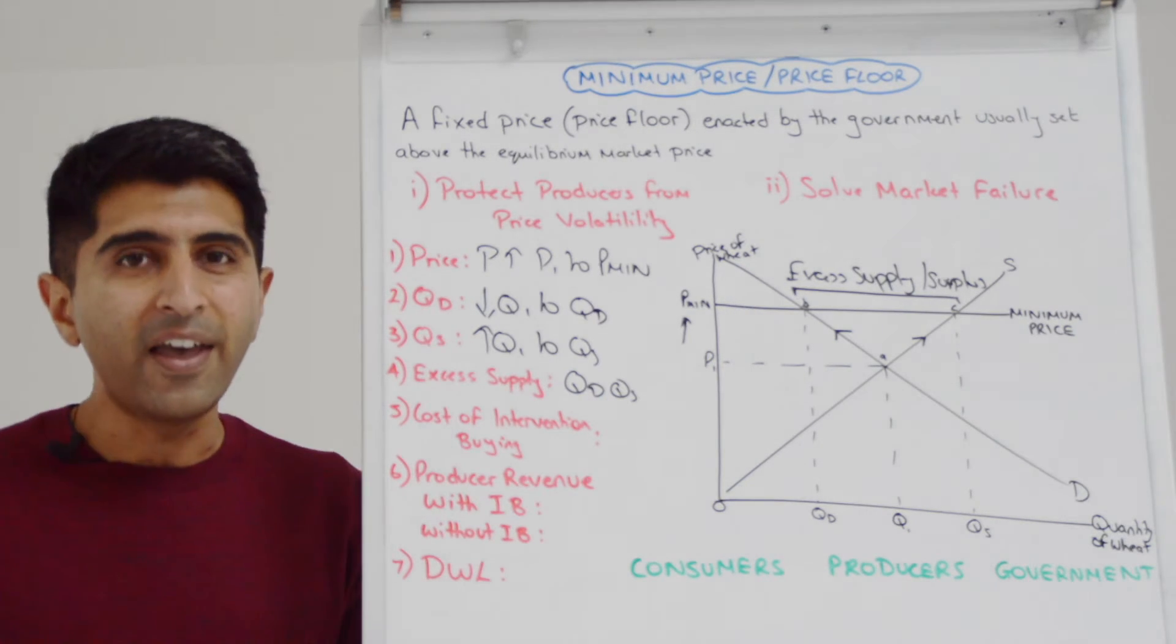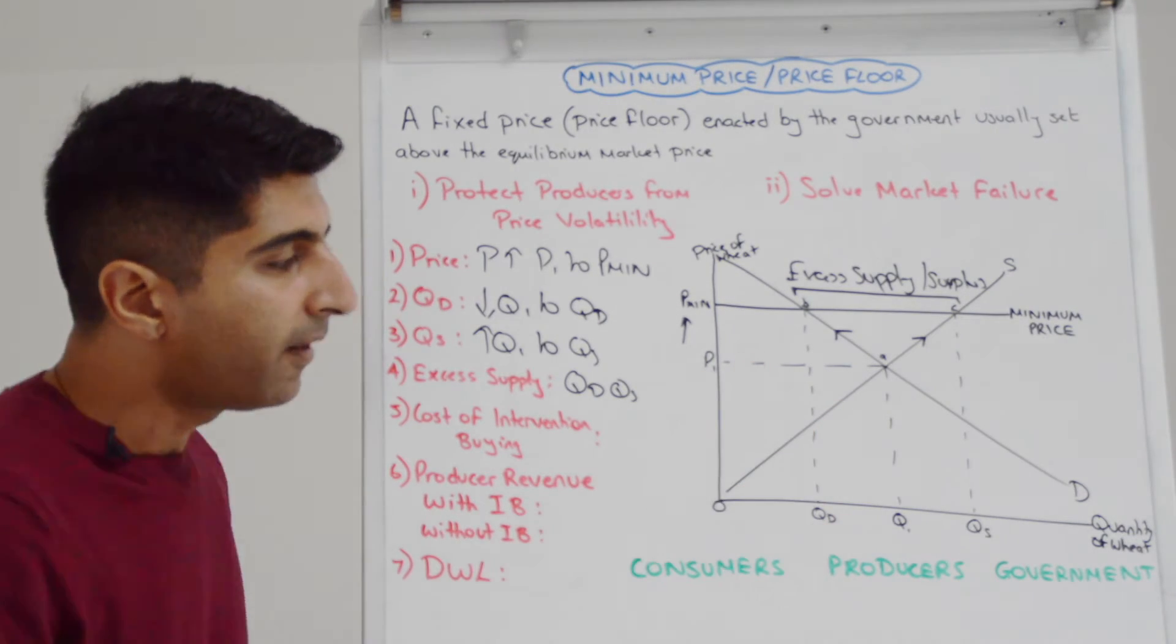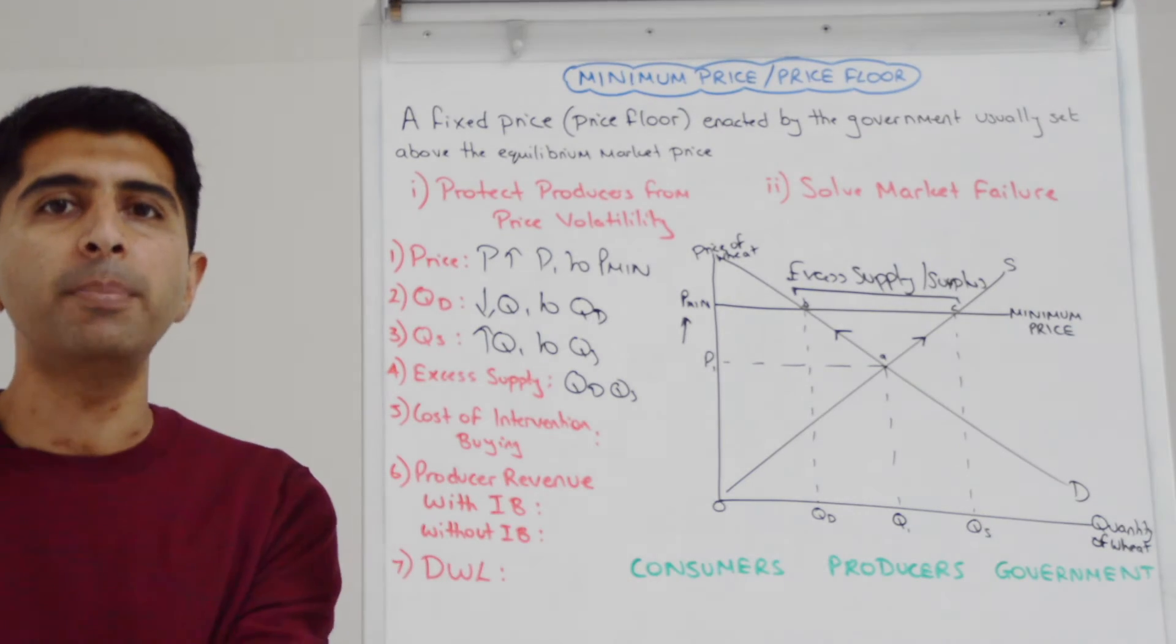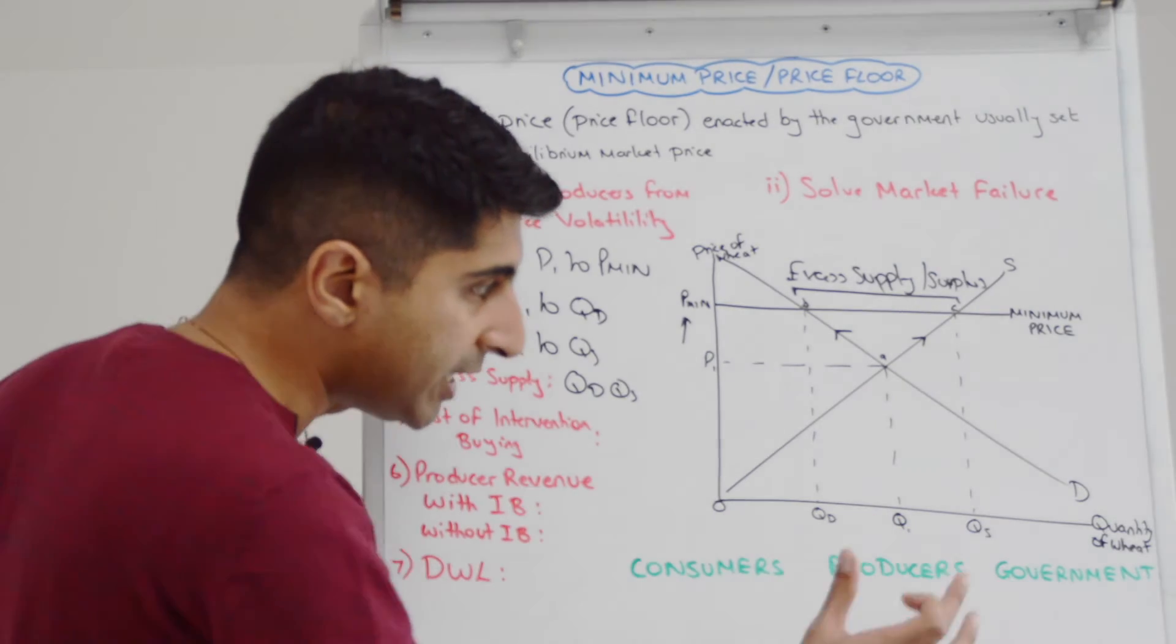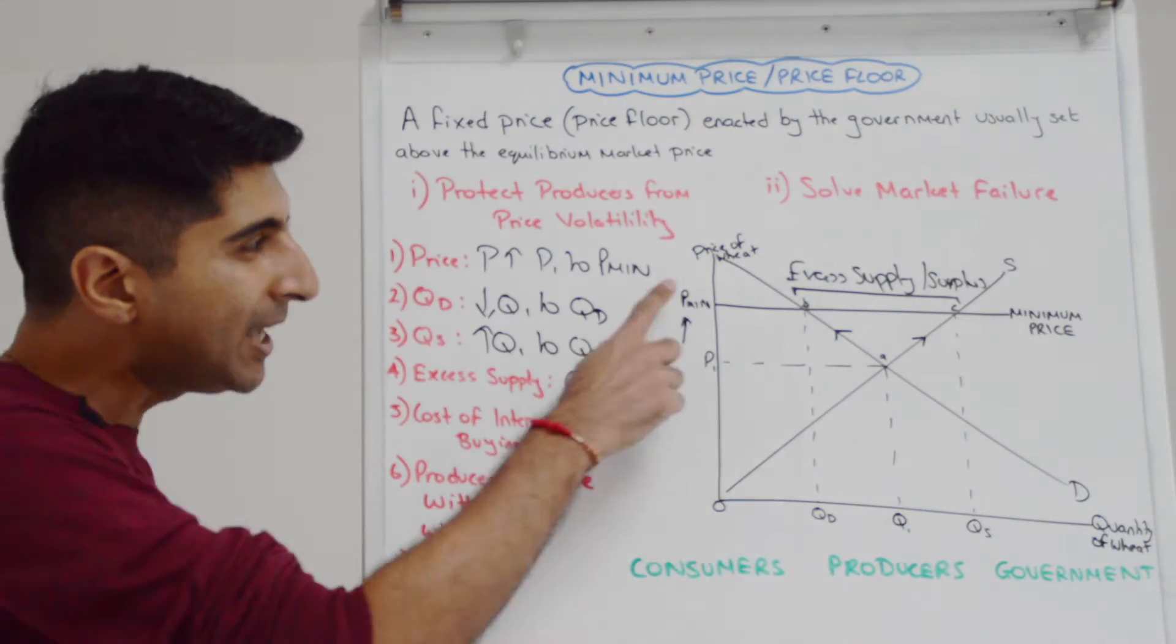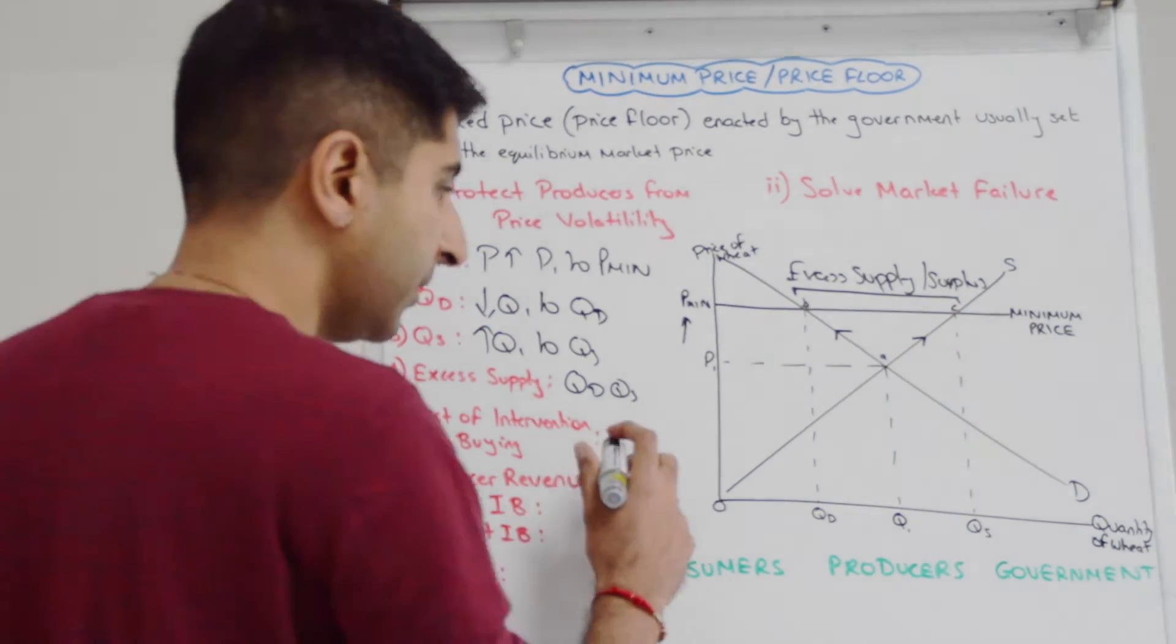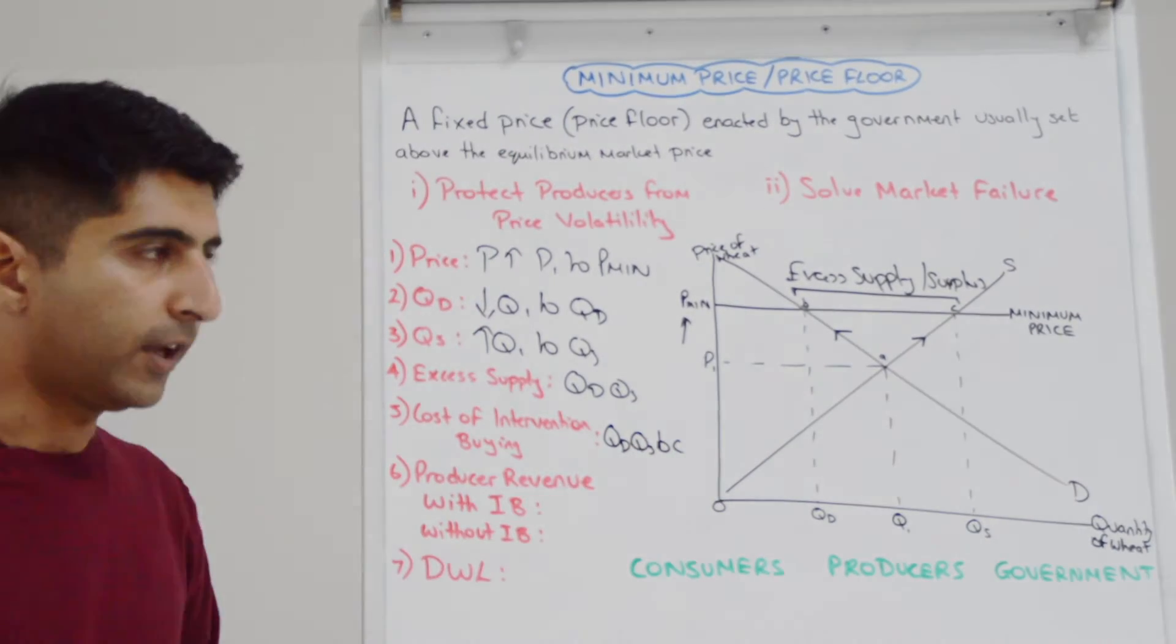So often what you will see, as long as the government can afford it, is the government will come in and they will buy up the excess supply, a process known as intervention buying. And what we can see on the diagram is exactly what the cost to the government will be of intervention buying. So the government would come in, the excess supply of QDQS is what they're buying up, and they're buying it up at the price of PMIN. So PMIN multiplied by QDQS gives us the area QDQSBC. That is the cost of intervention buying to the government.